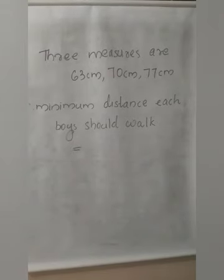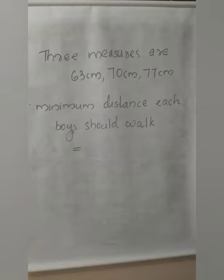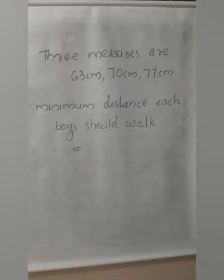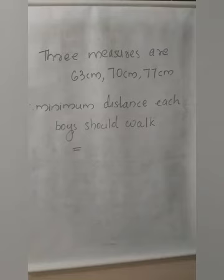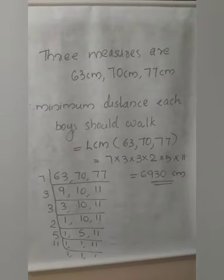For finding the minimum distance — for finding maximum we found HCF because it is the highest common factor. So in order to find minimum distance, what we need to find is LCM — lowest common multiple. If they are asking for maximum you find HCF. Here they are asking for the minimum distance that each boy should walk, so we need to find the LCM of these three measures.